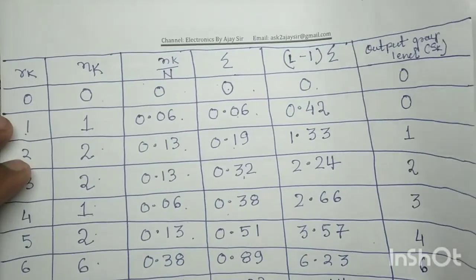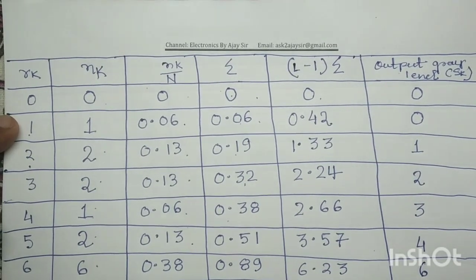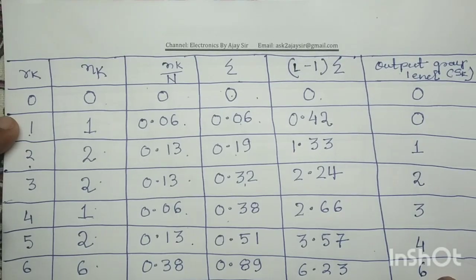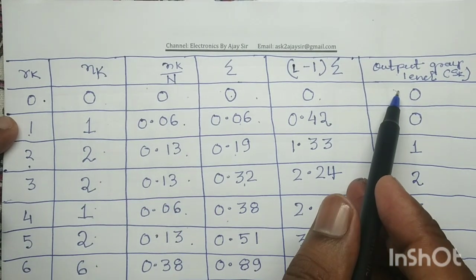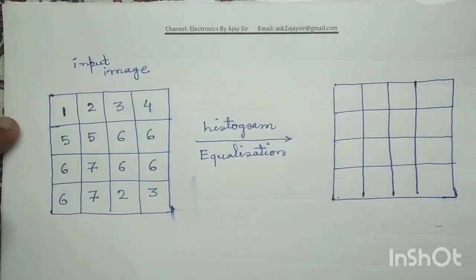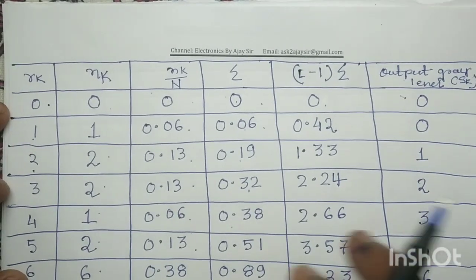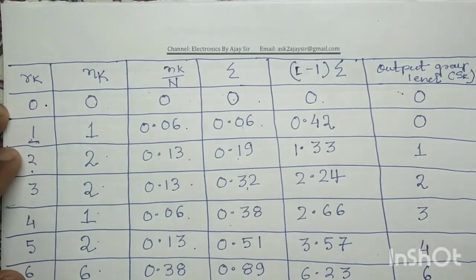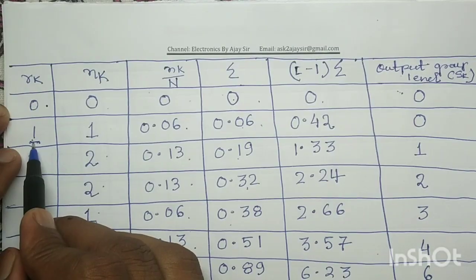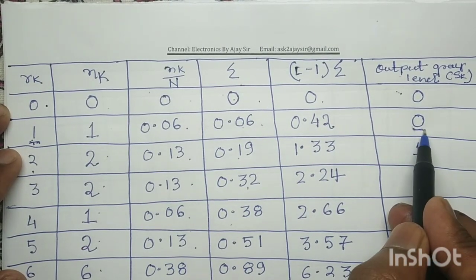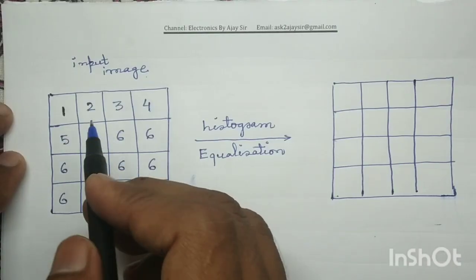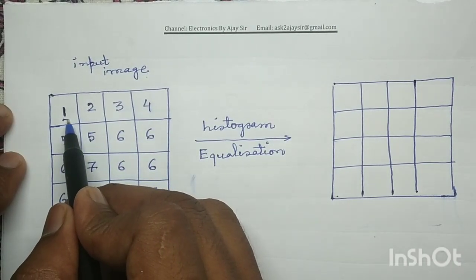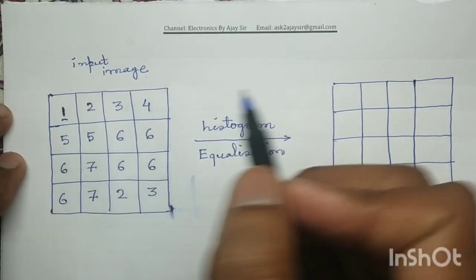Look at the histogram equalization table. For input gray level 0, it maps to output gray level 0. Since there is no input gray level 0 in our image, we write nothing. For input gray level 1, it maps to output gray level 0. In the input image, gray level 1 occurs only at one place, so we write 0 there in the output image.